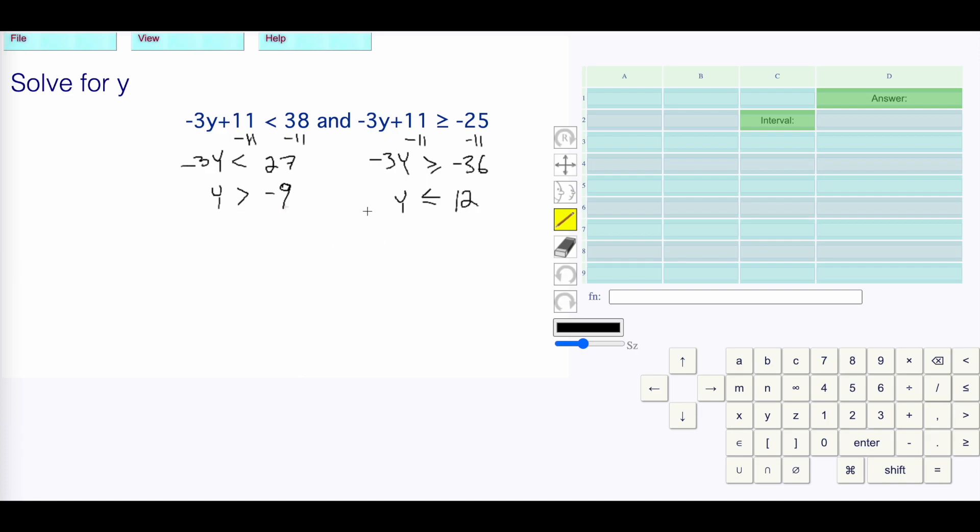y > -9, y ≤ 12. I'm going to make two number lines, put my -9 here and my 12 here. y > -9, I need a hollow dot there and then I'm shading this way.